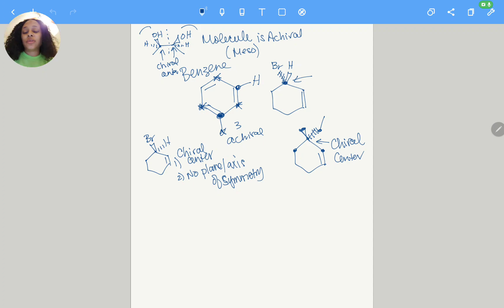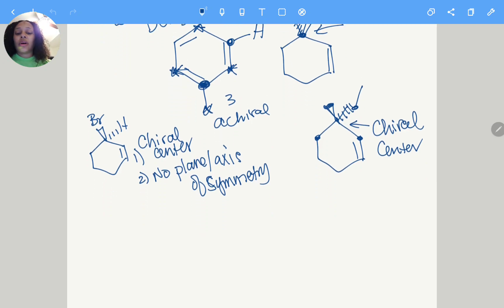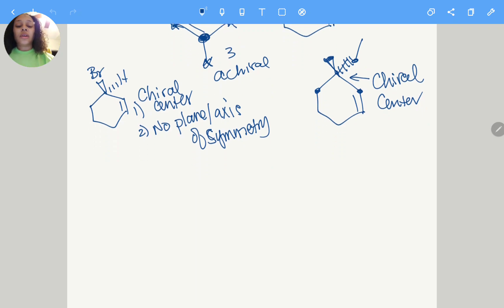This video is going to answer three questions that people have asked. One question was how do we figure out chirality on rings, so I'm going to do a couple of ring structures. What if both sides of the molecule look the same, is it still chiral? The answer to that is no, you have to have four different distinct groups around the carbon. And then how do you know if something is a chiral center? All of those things kind of come together, so I'm doing it as one.